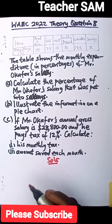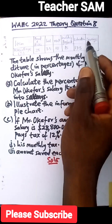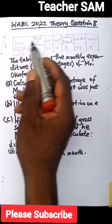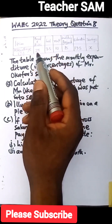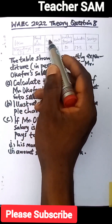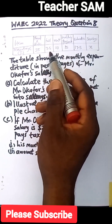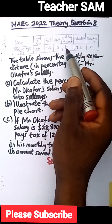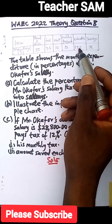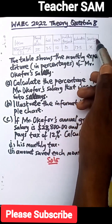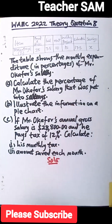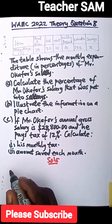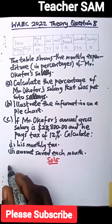We have this information presented in a table with items and percentages. We have food and drinks at 35%, fuel at 7.5%, rent at 10%, building project at 15%, education at 17.5%, and savings at X%. We don't know the savings percentage — and you should expect that's the first question asked.